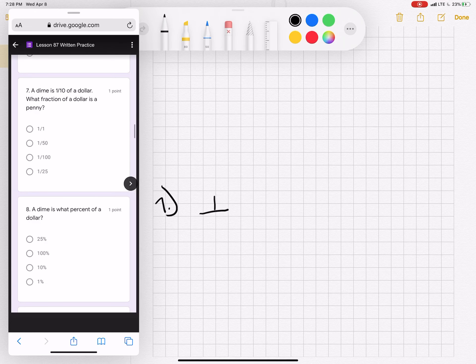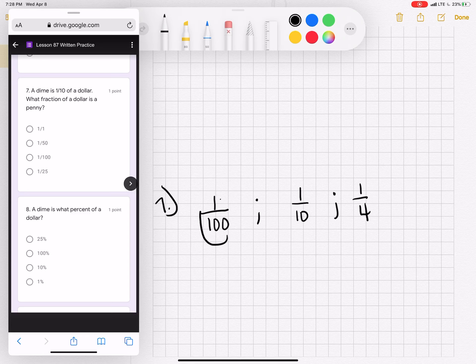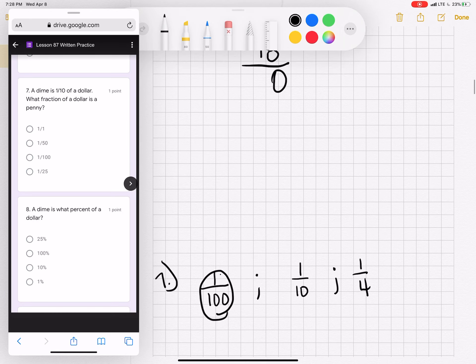A dime is 1 tenth of a dollar. What fraction of a dollar is a penny? When you have a penny, you have 1 out of 100 pennies to make a dollar. Just like when you have a dime, you have 1 out of 10 that make a dollar. If you have 1 quarter, you have 1 out of 4 that make a dollar. So a penny is 1 one-hundredth of a dollar.